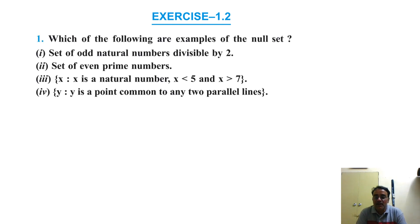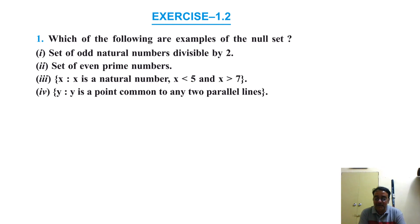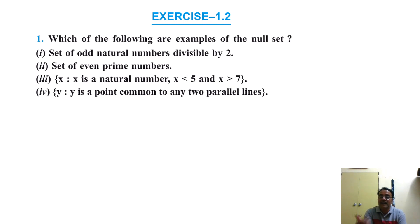Question 1 of Exercise 1.2: Which of the following are examples of the null set? The set of odd natural numbers divisible by 2 — there is no odd natural number divisible by 2, since numbers divisible by 2 are even. So there is no element, and this is a null set.